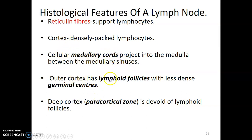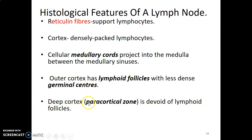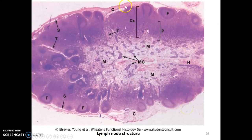The outer cortex contains lymphoid nodules whose germinal centers are less densely packed with cells, so they appear lightly stained. Moving deeper into the cortex brings you to the paracortical zone, which neighbors the medulla and is devoid of lymphoid nodules or follicles. This zone is populated mainly by T cells.